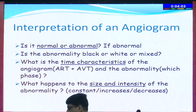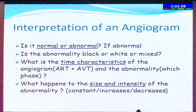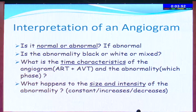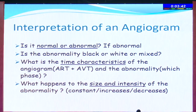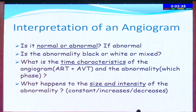To interpret an angiogram: first determine whether it is normal or abnormal. Then assess whether the abnormality is black, white, or mixed. Look at the time characteristics — the arm-retina time and arteriovenous transit time — and note in which phase the abnormality is seen. Finally, observe what happens to the size and intensity of the abnormality — whether it remains constant or whether the hyperfluorescence increases or decreases.